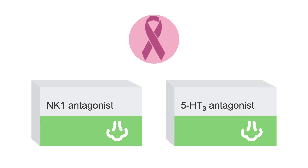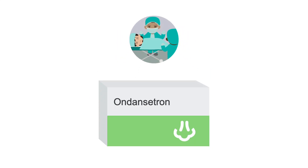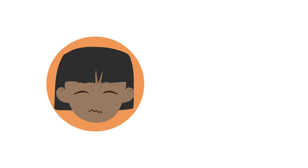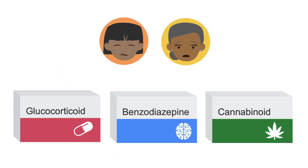For chemotherapy-induced nausea, NK1 or 5-HT3 antagonists can be helpful. For post-operative nausea and vomiting, 5-HT3 antagonists like ondansetron tend to work well. For nausea related to cortical stimuli like pain or anxiety, a centrally acting agent like a glucocorticoid, benzodiazepine, or cannabinoid might be good options.